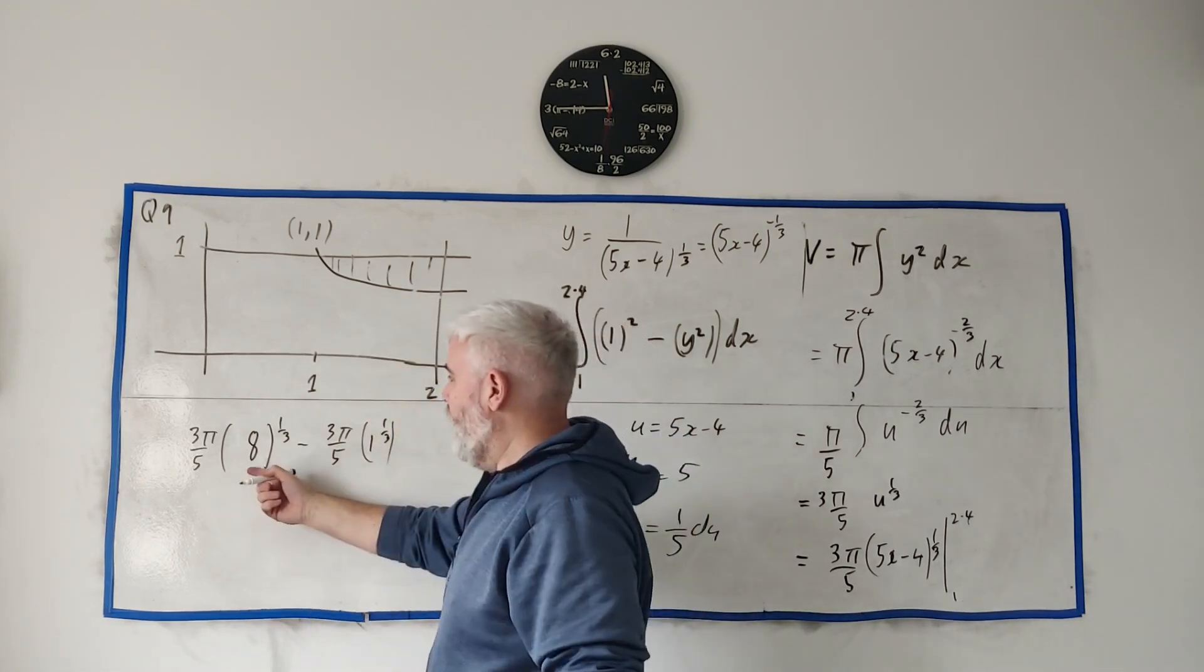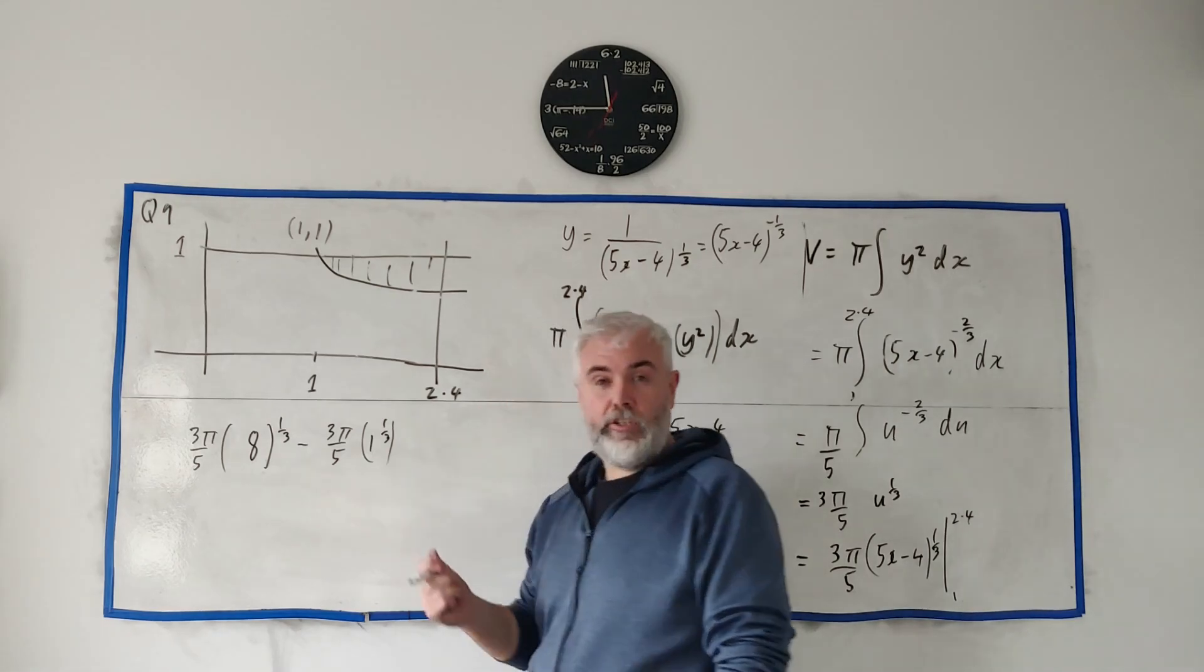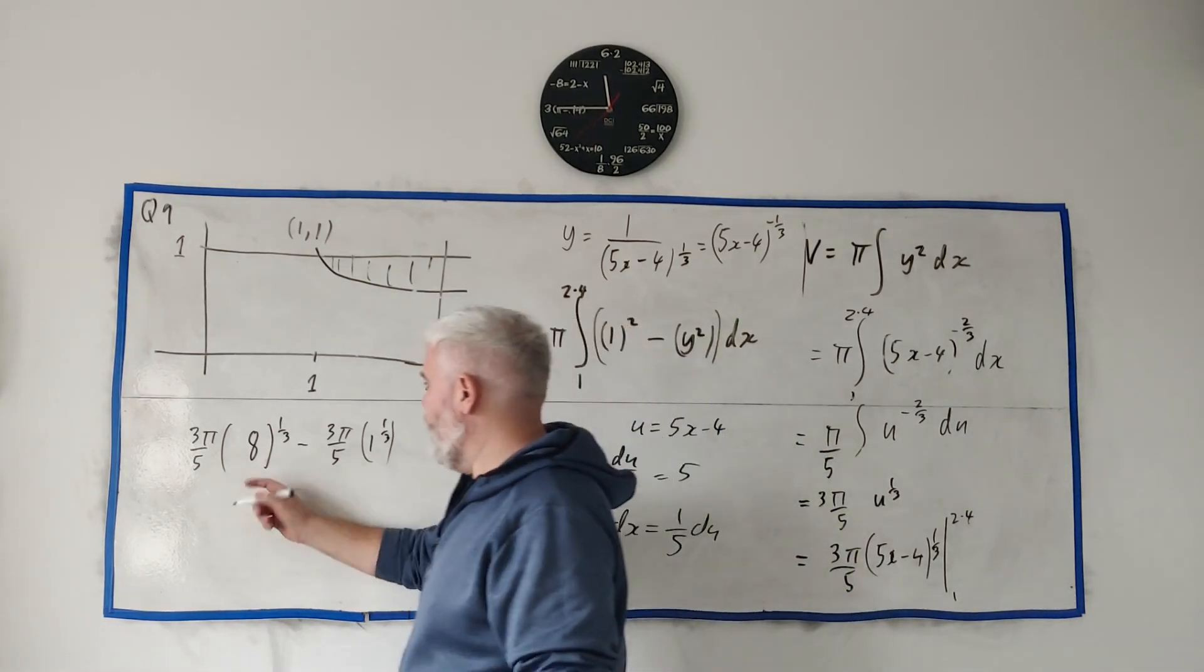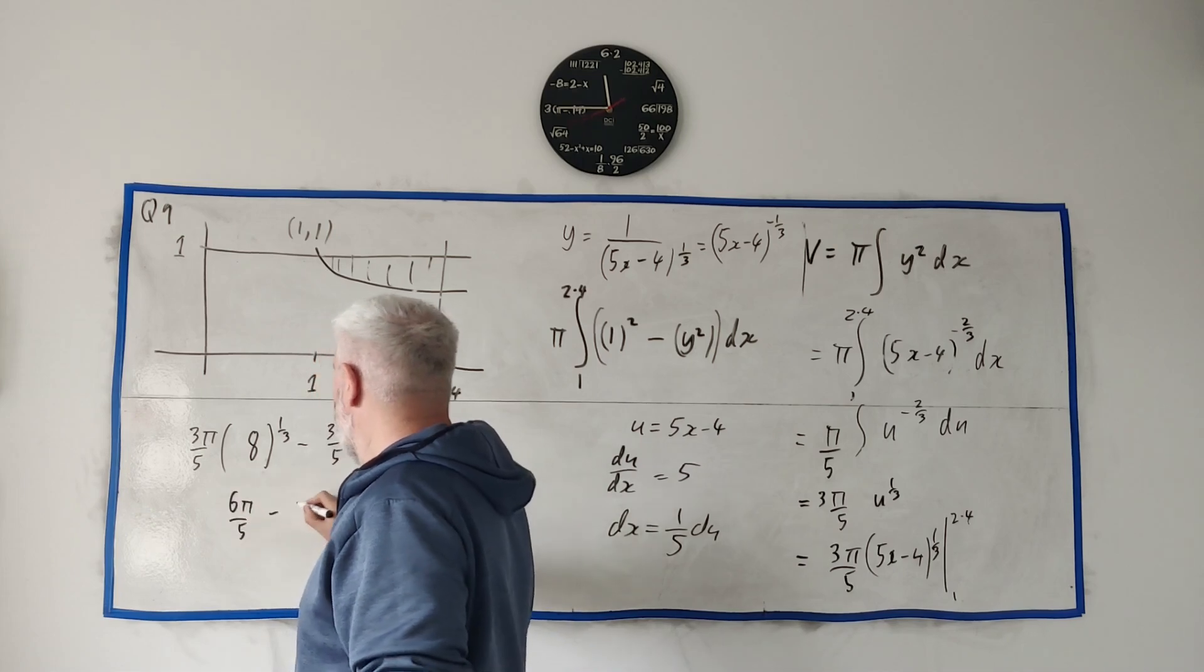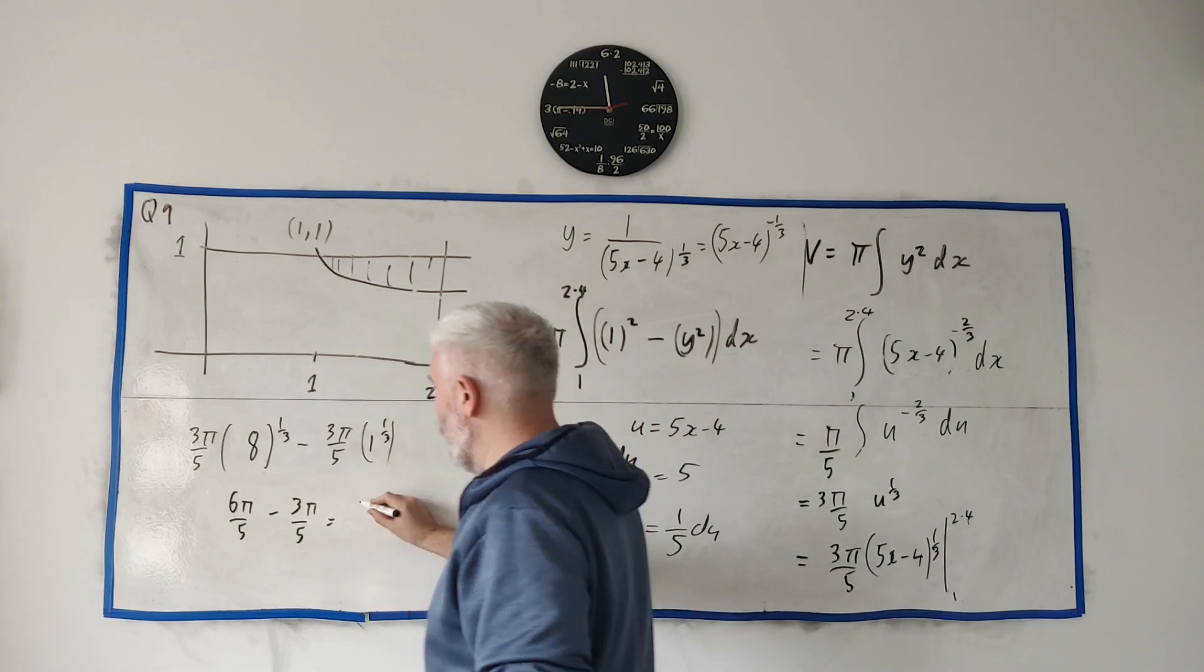Thankfully these are both nice numbers to do. 8 to the power of 1/3 is 2, 1 to the power of 1/3 is 1. So we get - let's see - we get 6 pi over 5 minus 3 pi over 5 is equal to 3 pi over 5.